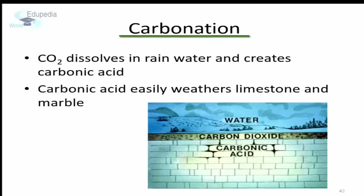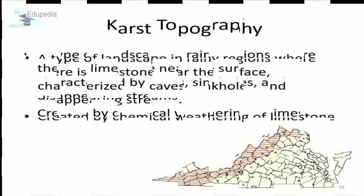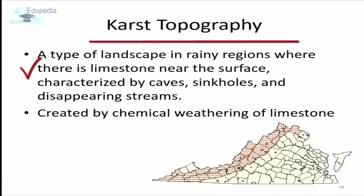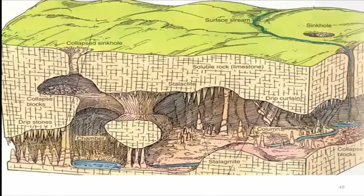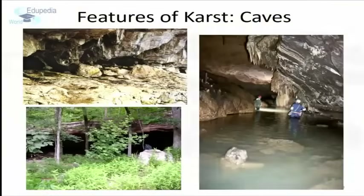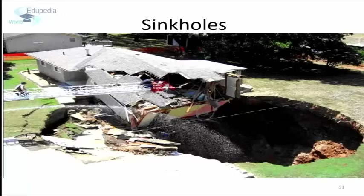Carbonation: When rainwater mixes with atmospheric carbon dioxide, a weak carbonic acid is formed. This carbonic acid can react with rocks in which calcite is present in good quantity, such as limestone and marble. The action of carbonic acid can result in the formation of a network of underground caves and channels. This extensive network of underground caves may result in the above-surface rock collapsing.